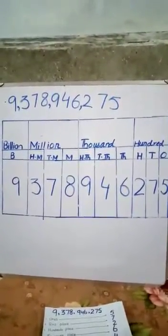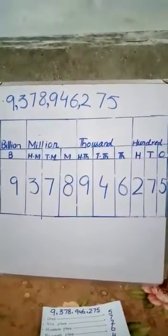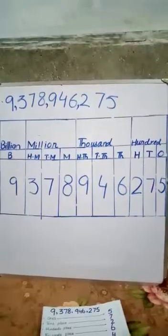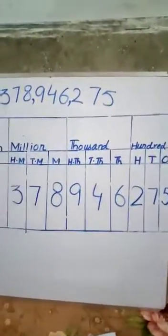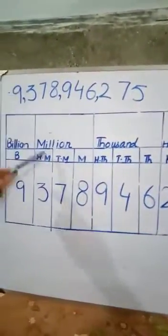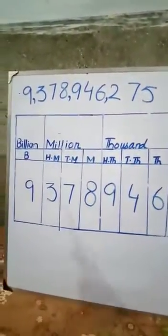Here we have 4 families: the 100 family and the 1,000 family.